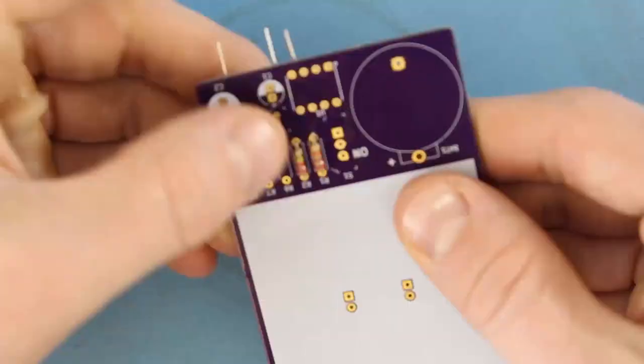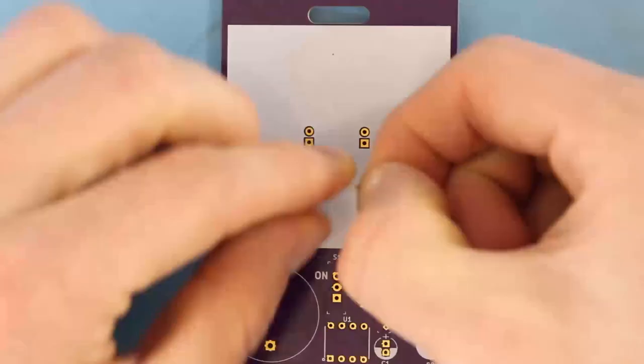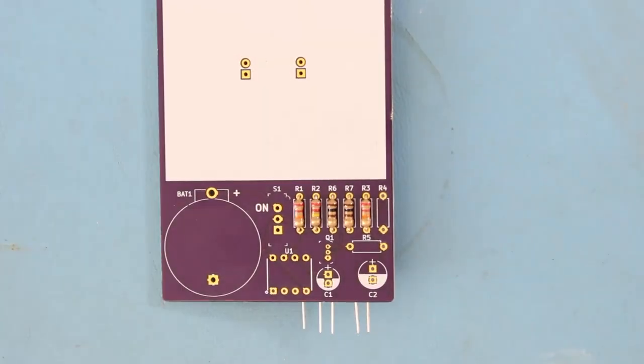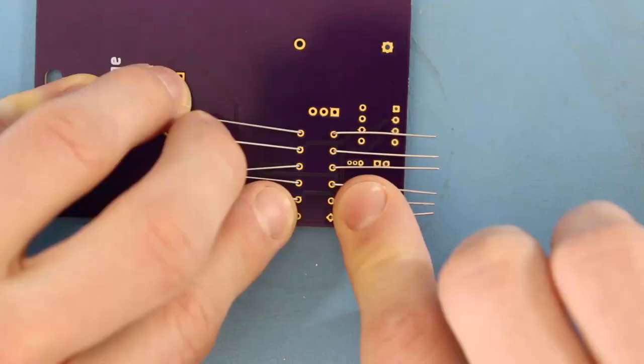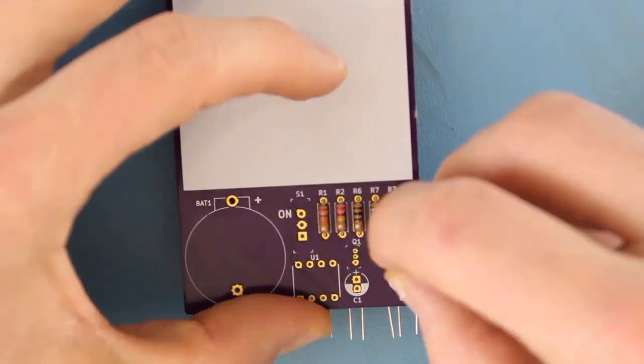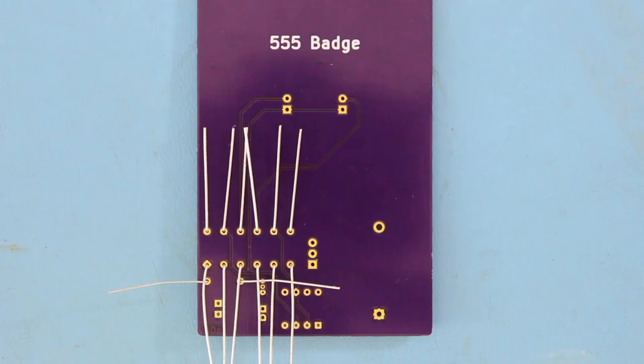Repeat this process for the rest of the resistors, making sure that you put the correct resistor in the right spot. Pay attention to the RefDes markings on the board. With all the resistors in place, turn the board over and solder all the leads.